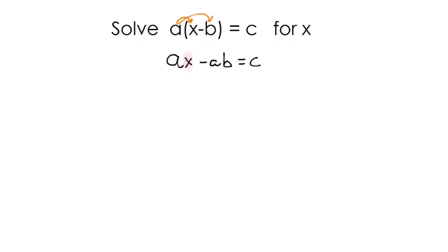And we're trying to get the X by itself. And so my next step would be to get rid of this term. So I'm going to add AB. Anything I do to one side, I'm going to do to the other. And we're left with AX equals C plus AB.